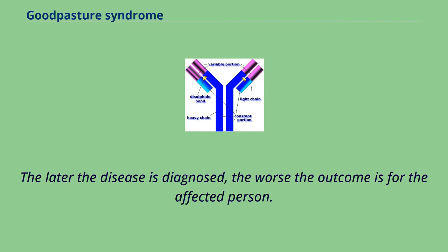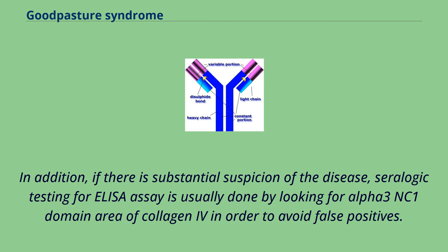The later the disease is diagnosed, the worse the outcome is for the affected person. If there is substantial suspicion of the disease, serologic testing via ELISA assay is usually done by looking for the alpha-3 and C1 domain area of collagen 4 in order to avoid false positives.